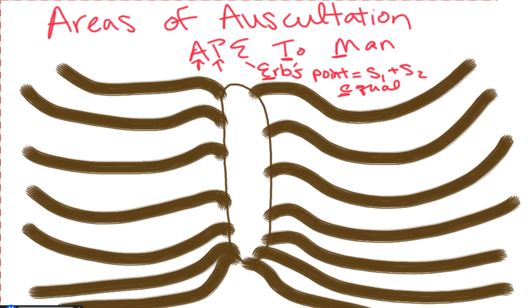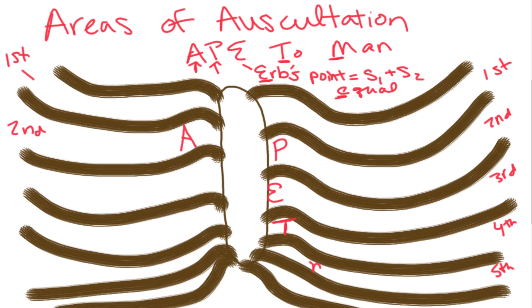Looking at our intercostal spaces: the aortic valve is best auscultated at the second intercostal space on the right side. The pulmonic valve is at the second intercostal space on the left. Erb's point is at the third intercostal space. Tricuspid is at the fourth intercostal space close to the sternal border. Mitral is at the fifth intercostal space, just medial to the midclavicular line.